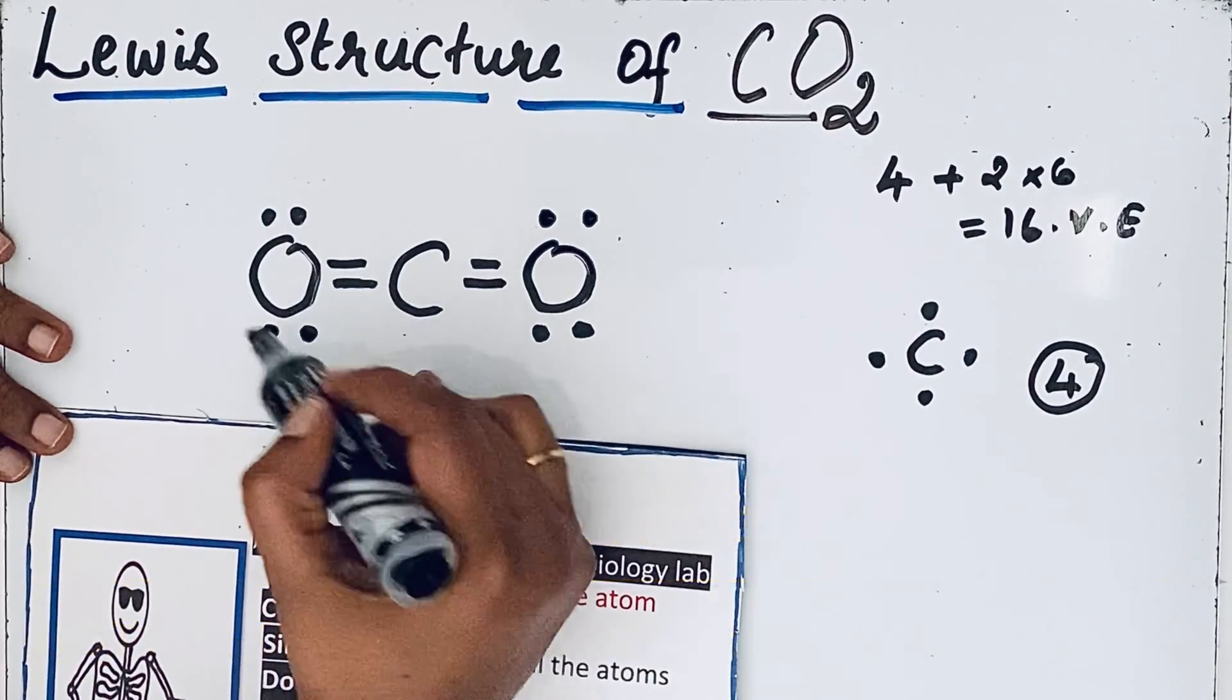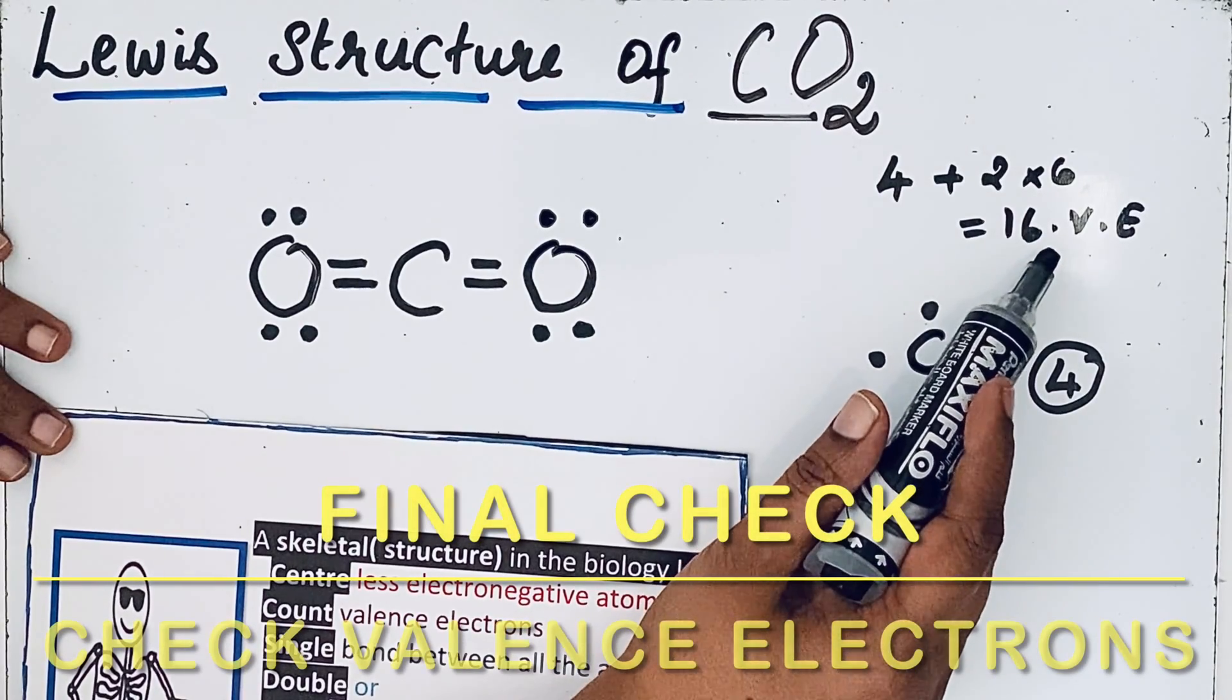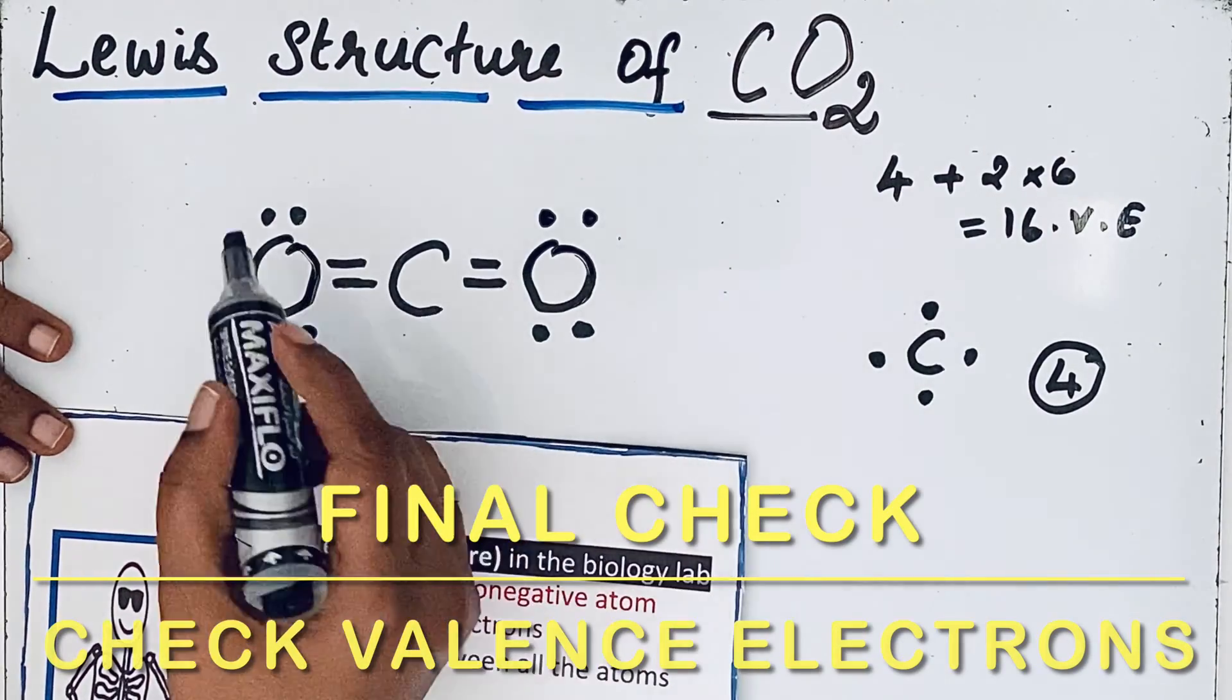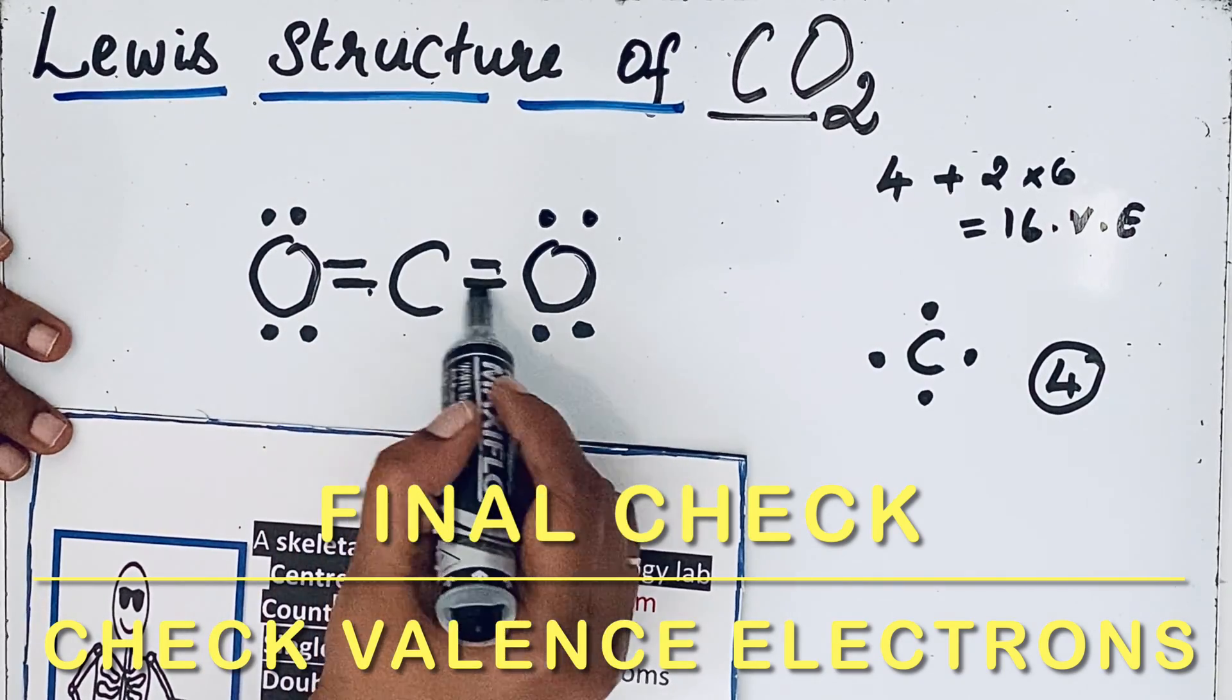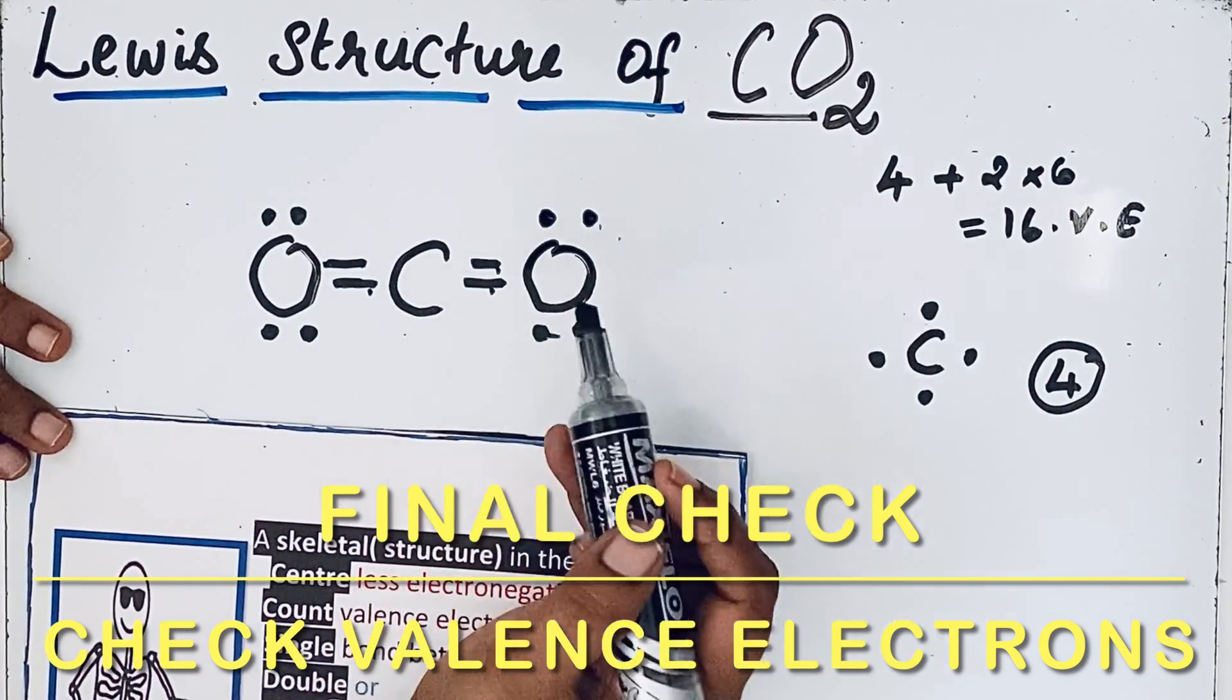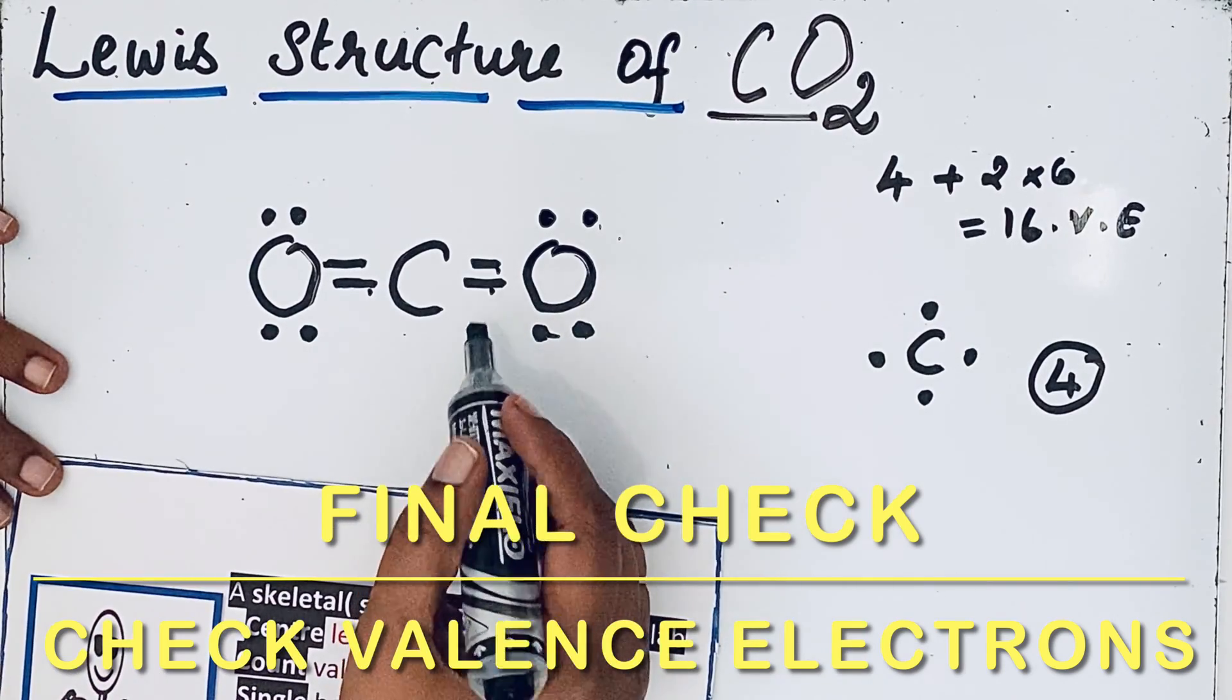Now let us check that 16 valence electrons are present in the molecule: 2, 4, 6, 8, 10, 12, 14, 16 valence electrons are present. So this is the perfect Lewis structure of carbon dioxide molecule.